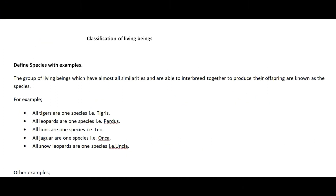In the chapter classification of living beings for class 9 science, you have to study different terms like genus, species, generic name, specific name, scientific name, binomial system of nomenclature, taxonomy, and classification. I am going to explain all those terms clearly with examples, starting with species, then genus, generic name, specific name, scientific name, nomenclature, taxonomy, and classification.